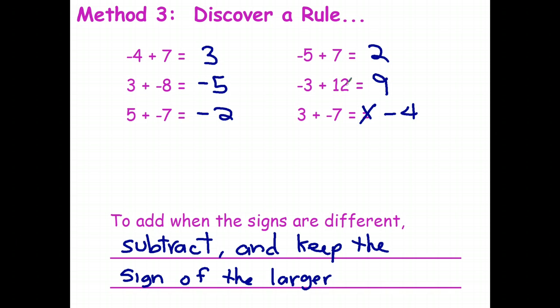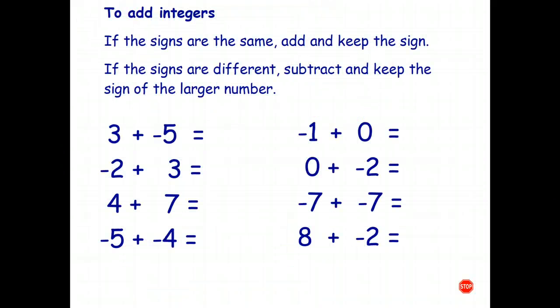So if you want to use a rule for adding, you've got to do it in two steps: if the signs are the same, add the numbers and keep the sign; and if the signs are different, subtract the numbers and keep the sign of the larger number.